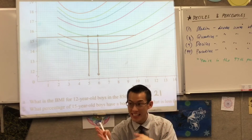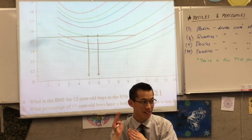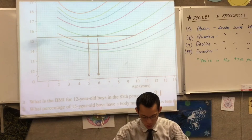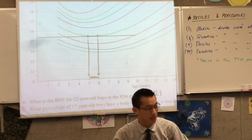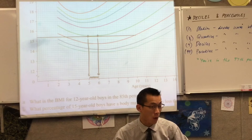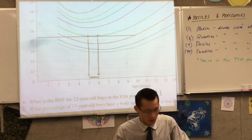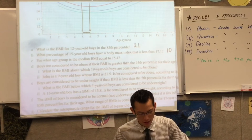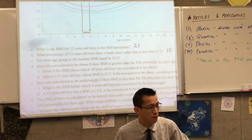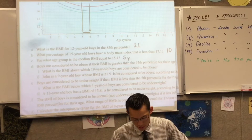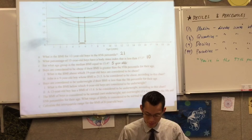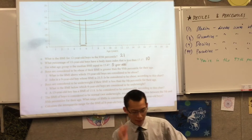I haven't turned six yet. You're not six until you've passed right over six. So everyone in this space here, they're all what we would call five years old. So therefore my answer — what age group is the median BMI equal to 15.4? — is five-year-olds. I think that's the answer.